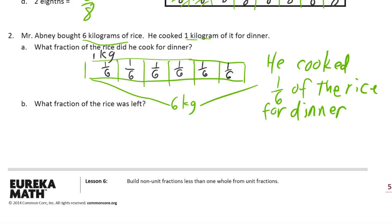Now this phrase right here — 'of the rice' — you have to have that. You can't just say he cooked one-sixth. A fraction is always a fraction of some whole, and you have to name what the whole is when you name the fraction. You can't leave that out. Because otherwise it could be one-sixth of a pound, or one-sixth of a kilogram, or one-sixth of anything. So be sure that you name the whole of the fraction, especially when you're writing an answer to a word problem.